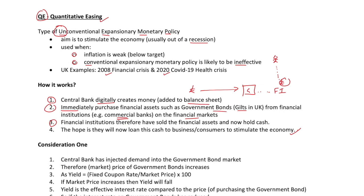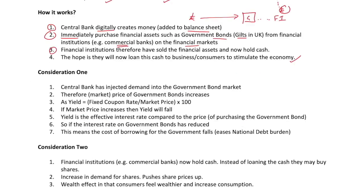There are a few considerations to think about. Consideration one: the central bank has injected demand into the government bond market by becoming a new player in the market. Because they've injected demand into the gilt market, the price of government bonds will increase. When thinking about government bonds, we need to think about yields: yield equals the fixed coupon rate divided by the market price, times by 100. Because there's extra demand, the price goes up, which means the yield must fall.